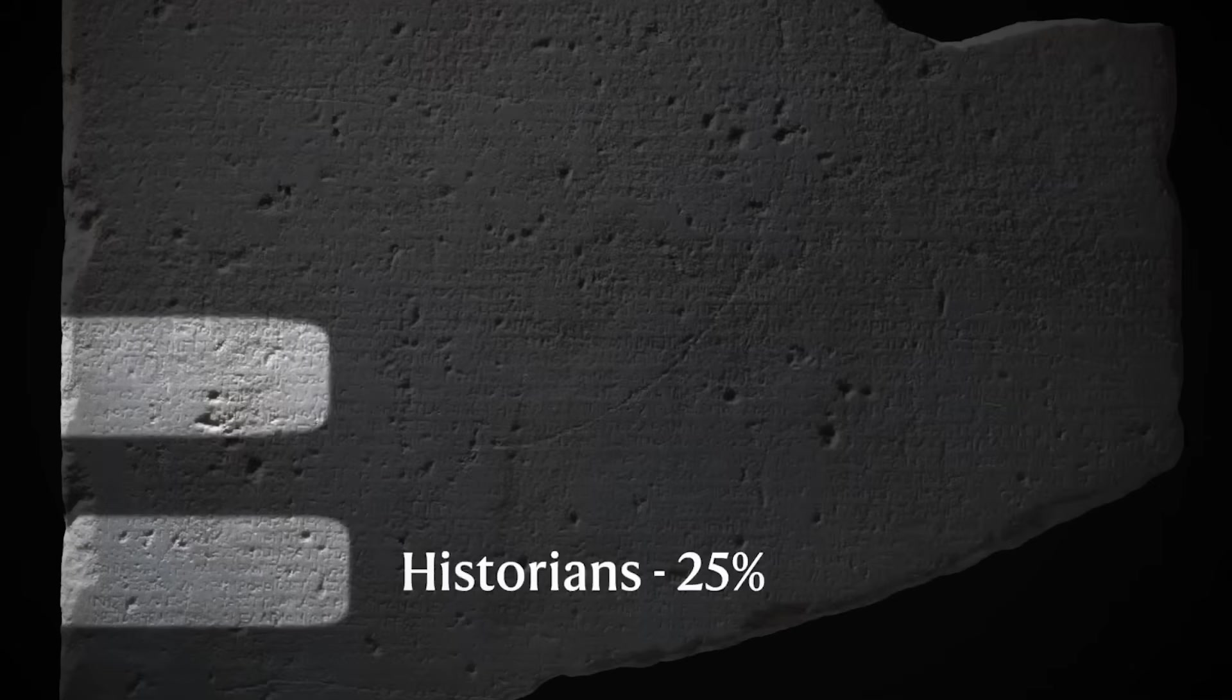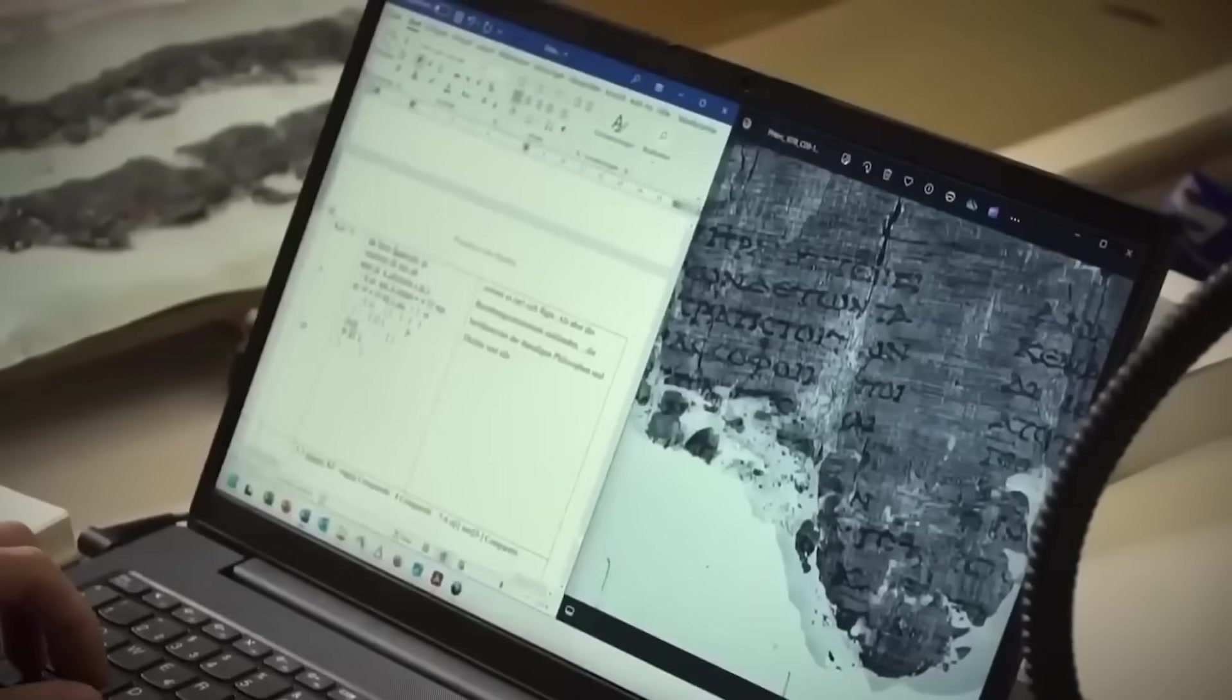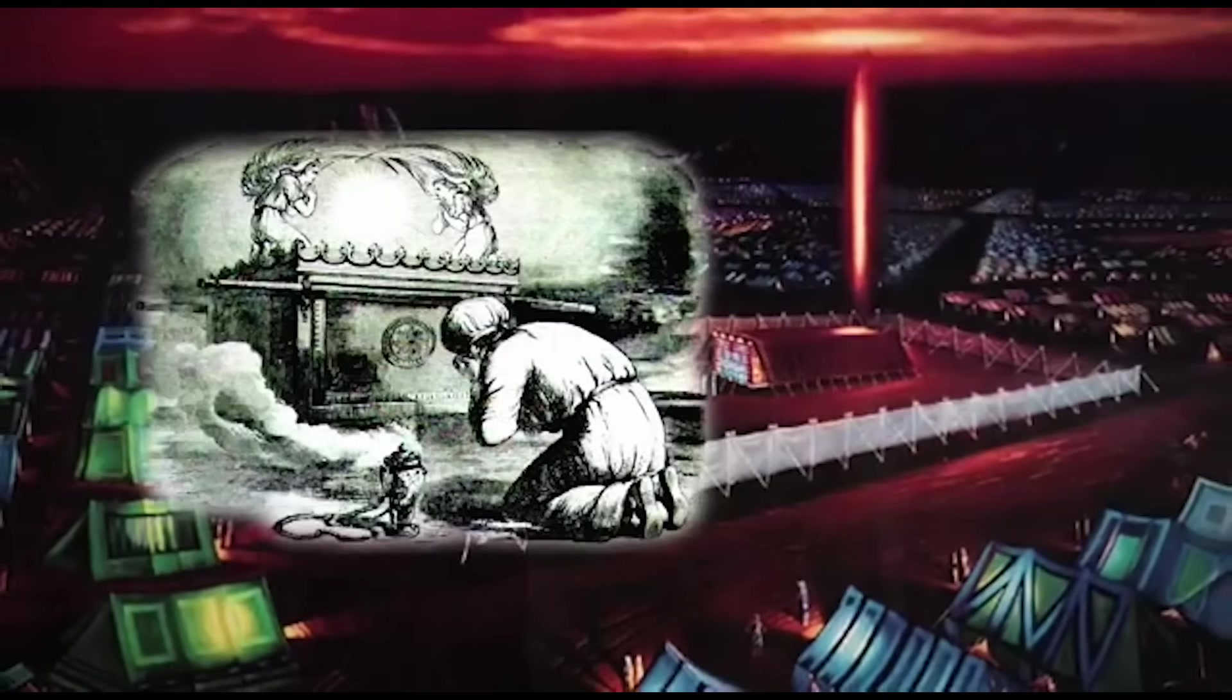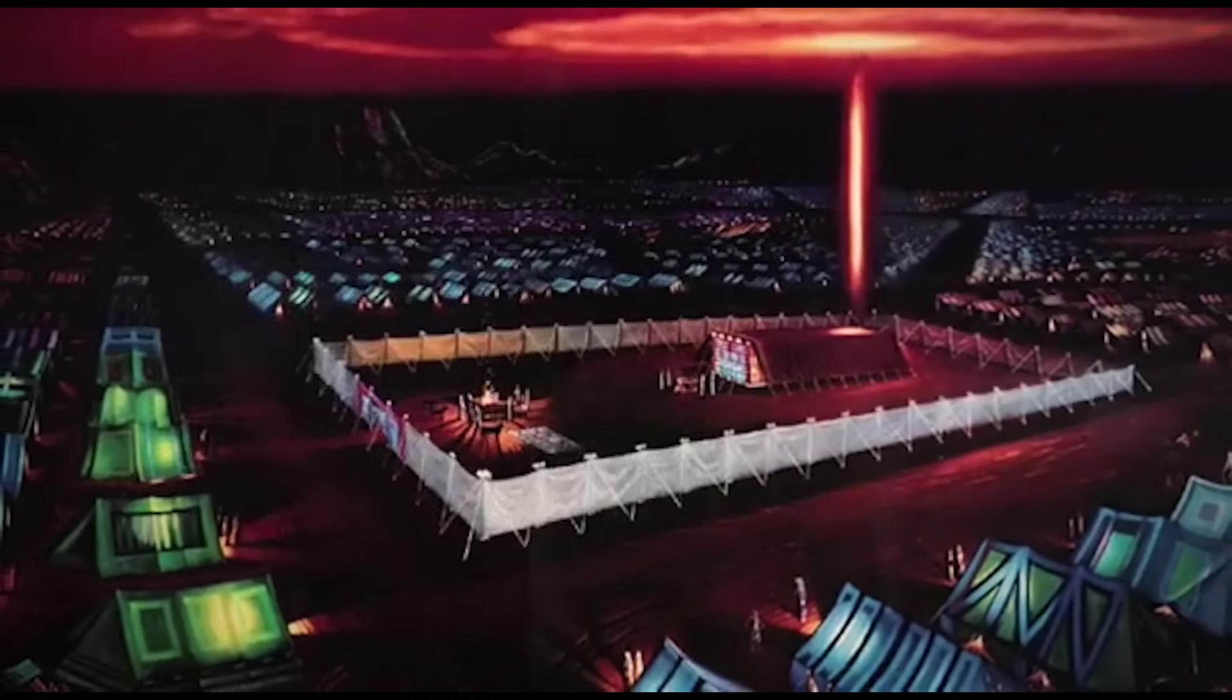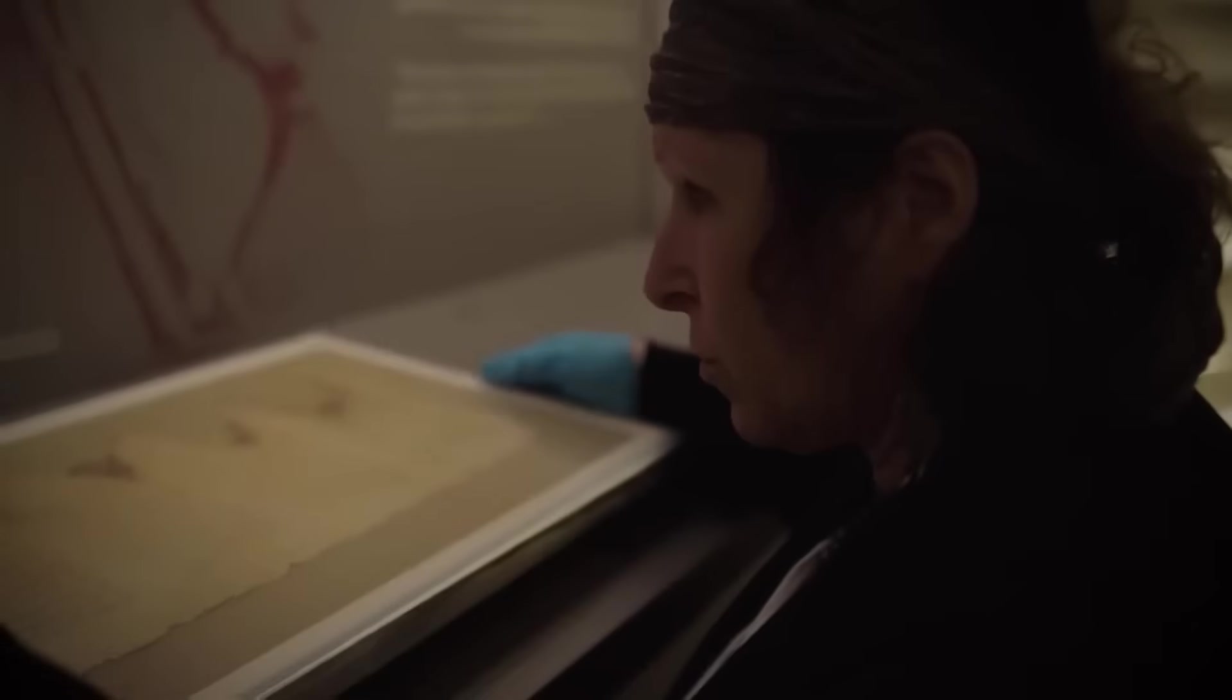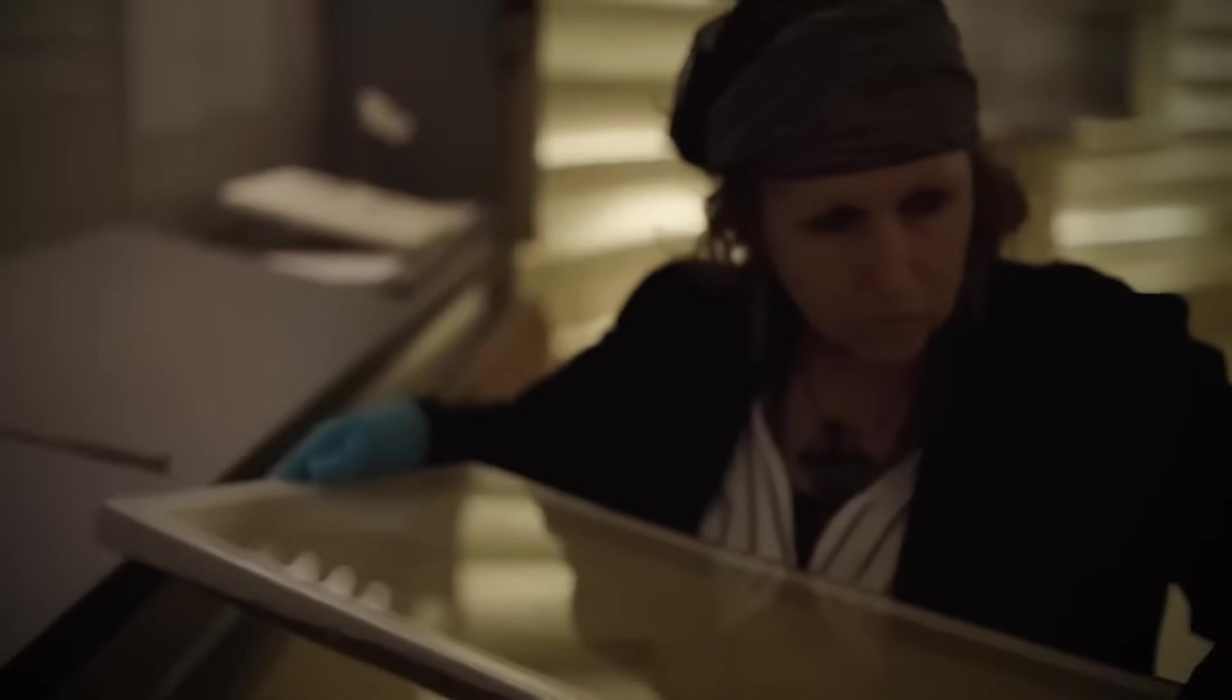The eternal vessel of radiance isn't isolated in ancient texts. Similar descriptions appear throughout history, hiding in plain sight. Consider the Ark of the Covenant. Biblical accounts describe it as dangerously powerful, sometimes glowing, and deadly to touch. Those who handled it improperly allegedly died on the spot. Modern physicists have wondered, could the Ark have contained something radioactive? The symptoms described—burns, sickness, death—match radiation exposure.